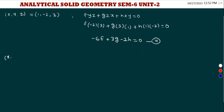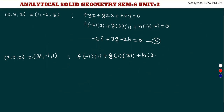For the second line, the direction ratios give x=31, y=-1, z=1. Substituting into fyz + gzx + hxy = 0: f(y)(z) + g(z)(x) + h(x)(y) = 0, giving -f + 31g - 31h = 0. This is Equation 5.